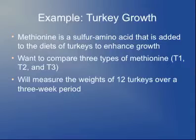A simple example of when blocking might be useful was an experiment on the growth of turkeys, where the experimenter wanted to know if adding methionine to the diet of turkeys could help them grow larger, presumably for commercial purposes. It was already known that methionine would increase growth; the goal was to compare three different types of methionine, which we'll call T1, T2, and T3. The experimental design was to collect 12 turkeys, randomly assign four to get T1, four to get T2, and four to get T3, then weigh them three weeks later.